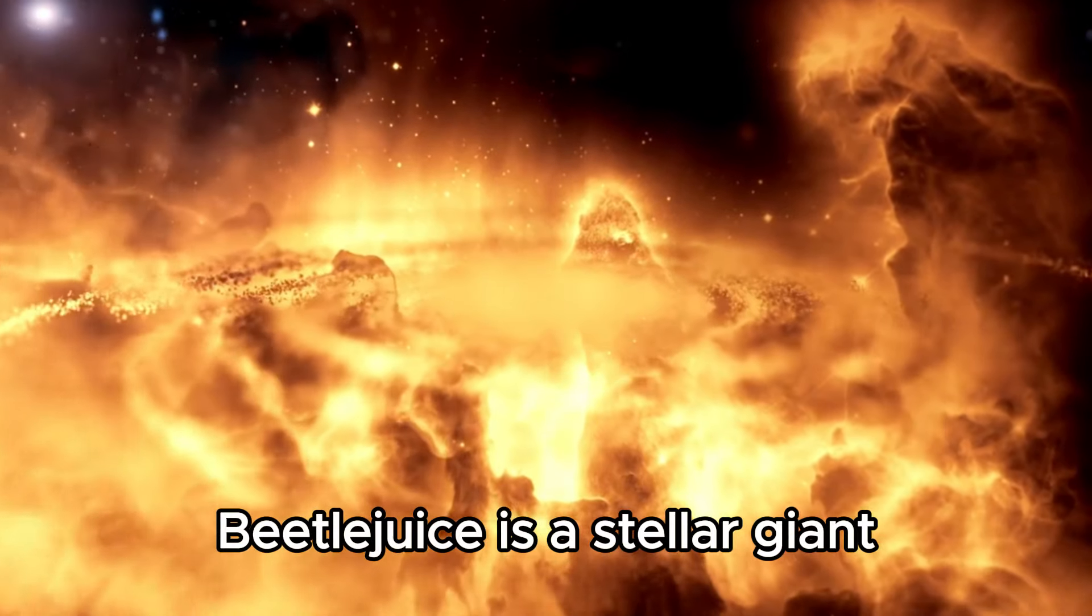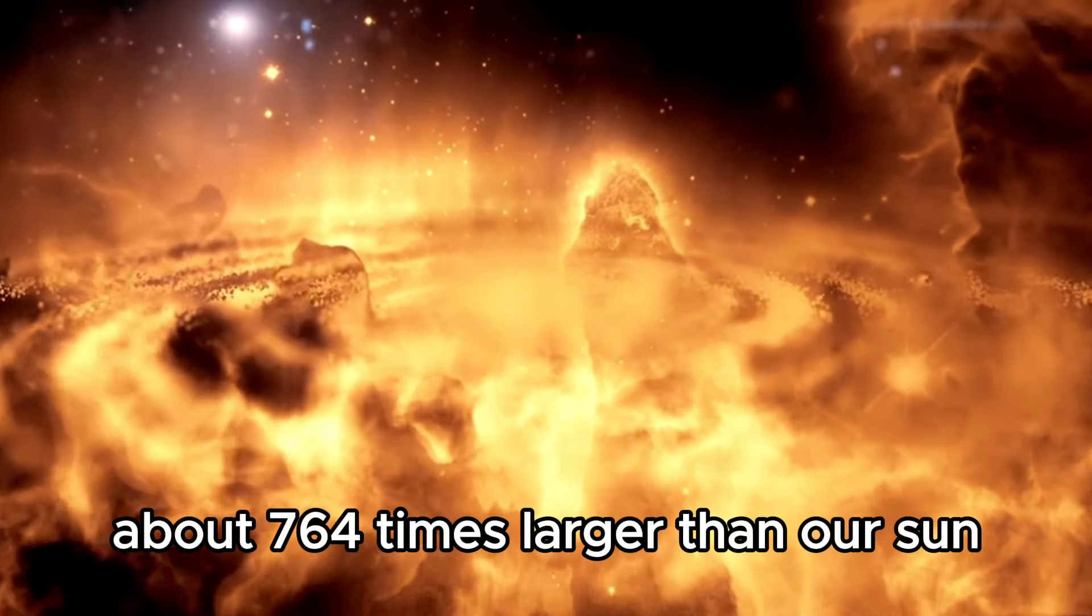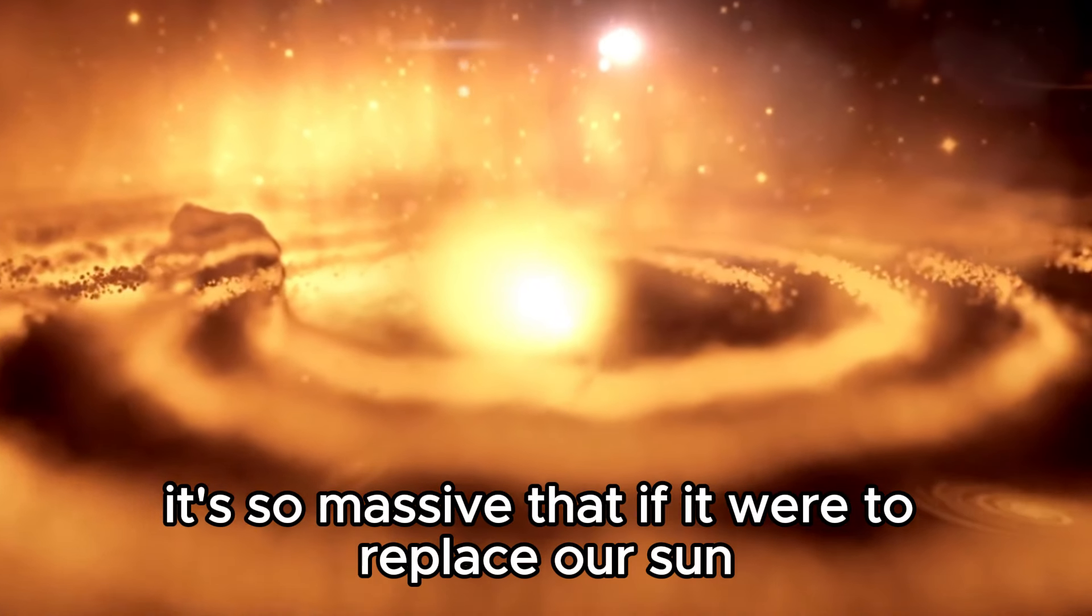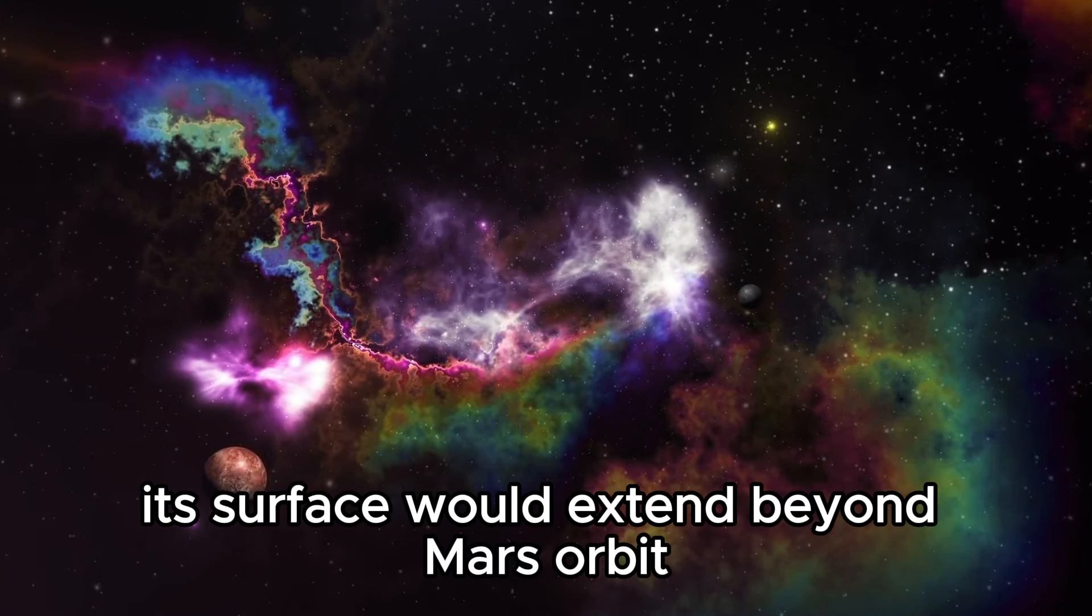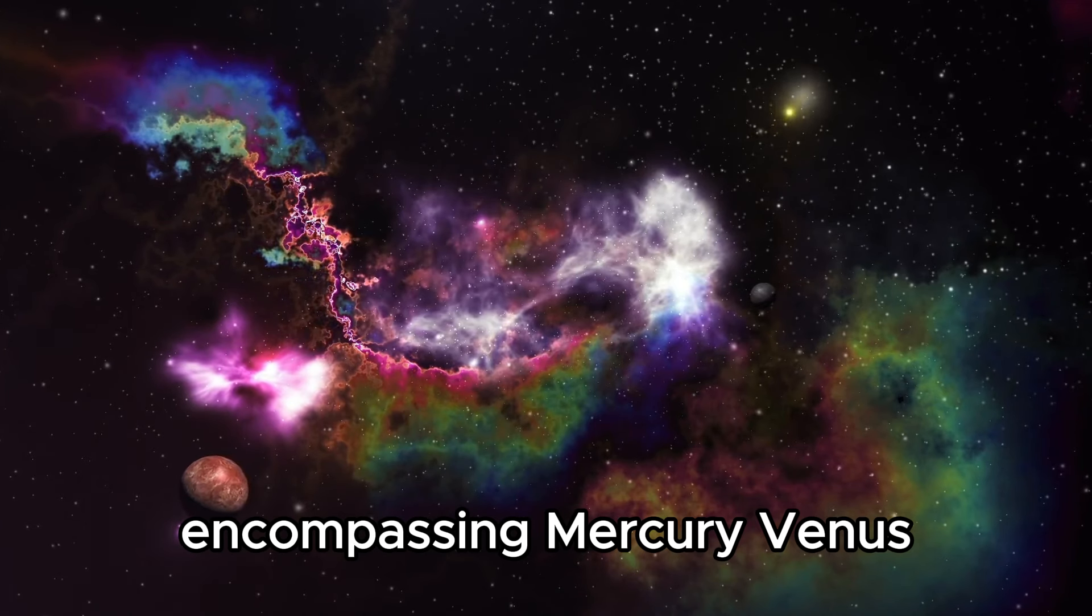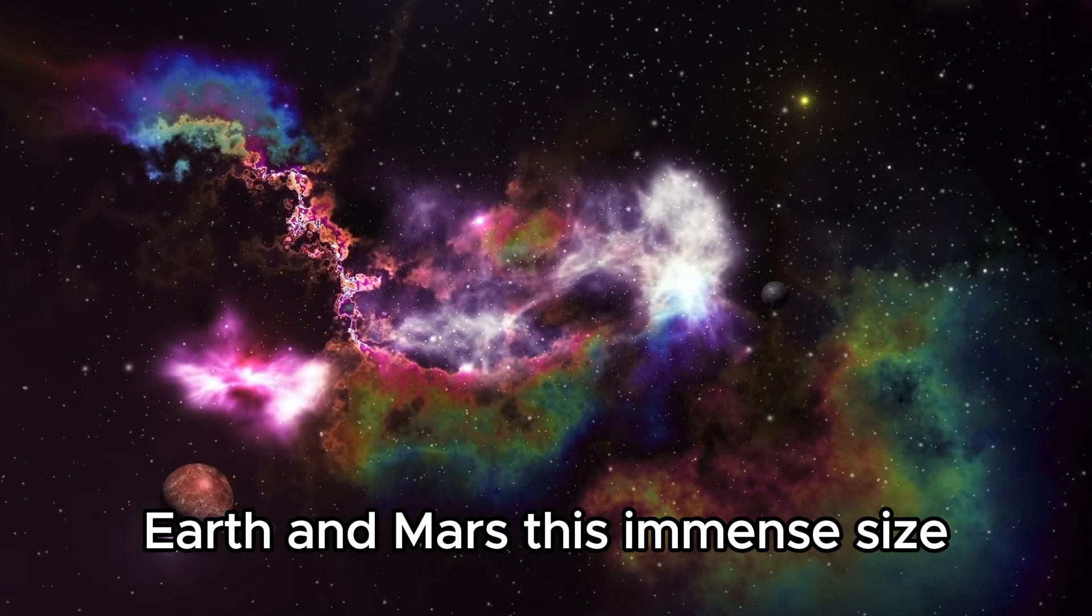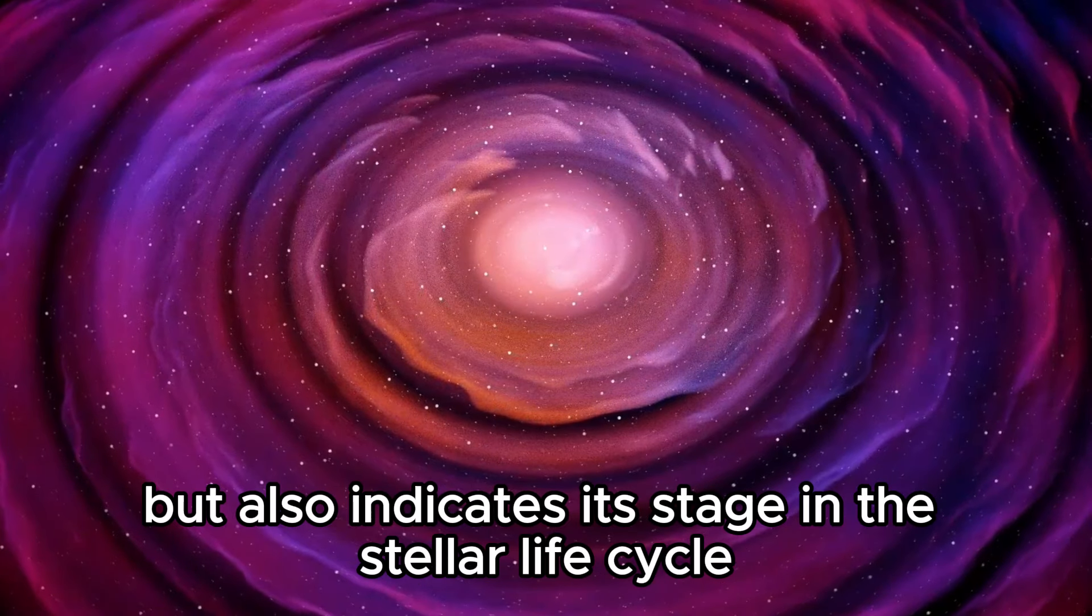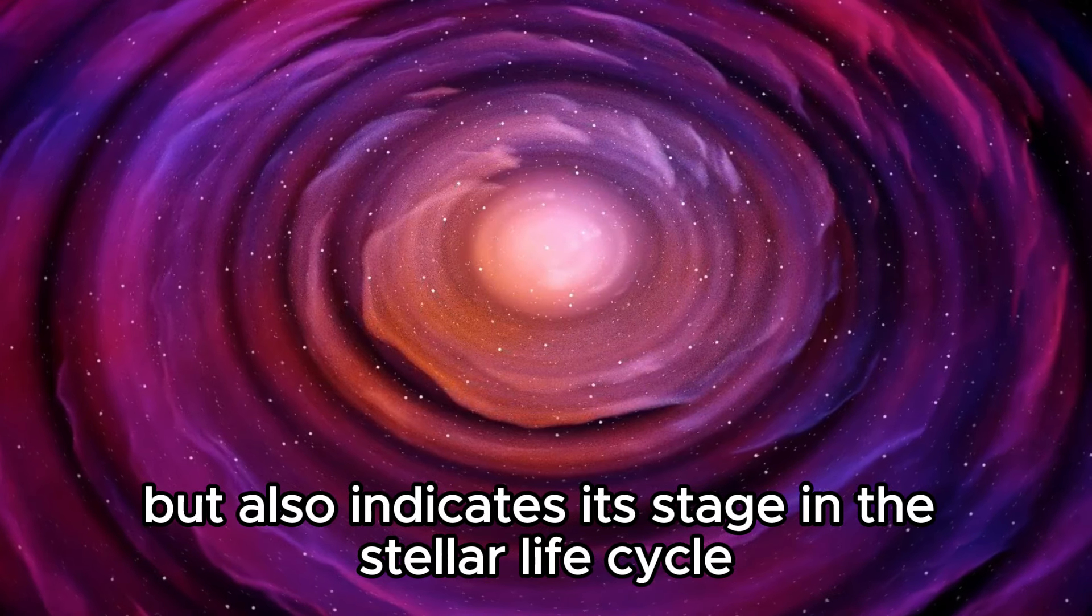Betelgeuse is a stellar giant, about 764 times larger than our sun. It's so massive that if it were to replace our sun, its surface would extend beyond Mars' orbit, encompassing Mercury, Venus, Earth, and Mars. This immense size not only highlights Betelgeuse's physical grandeur, but also indicates its stage in the stellar life cycle.